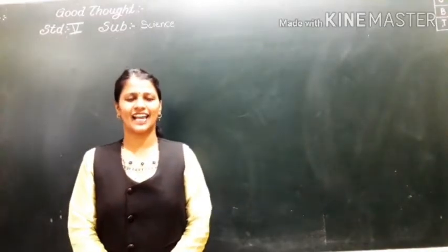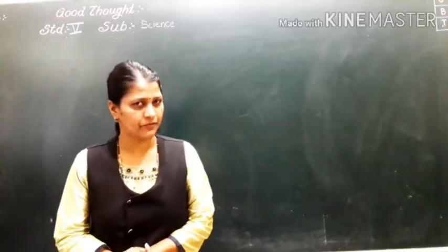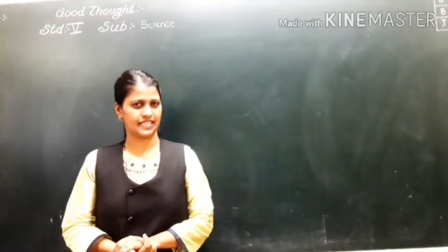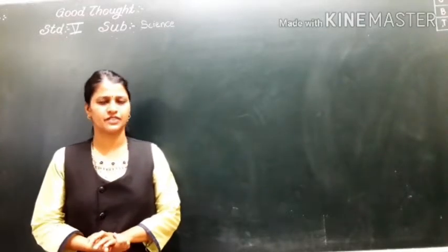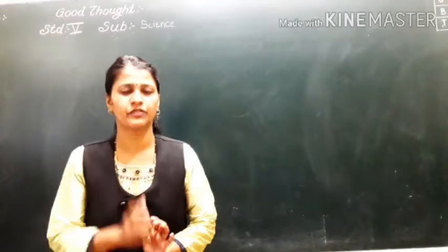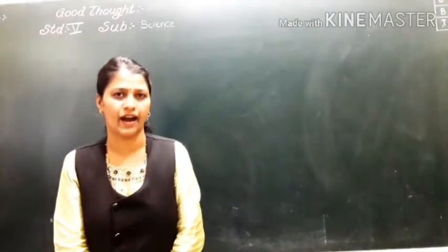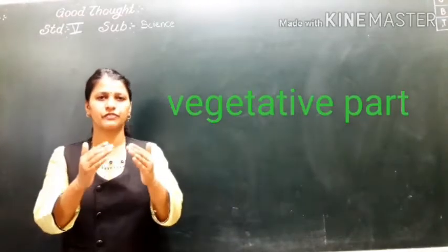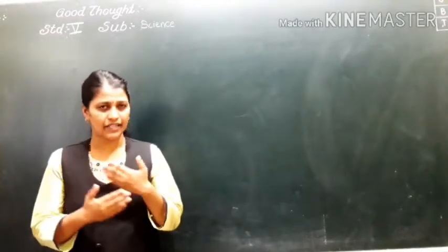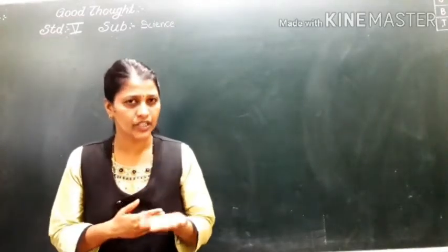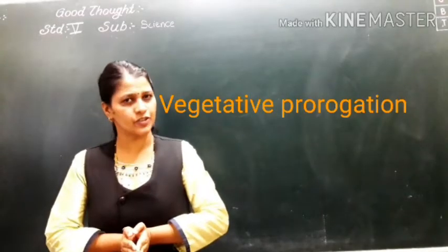Hello dear students. In the last video we learnt about growing a plant with the help of other parts of the plant — root, stem, and leaves. These are called vegetative parts. When we grow a new plant using these parts, that process is called vegetative propagation.